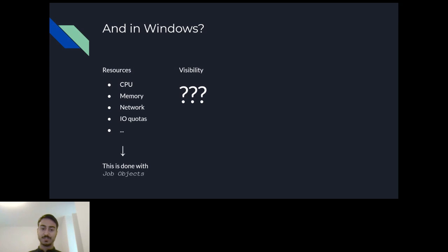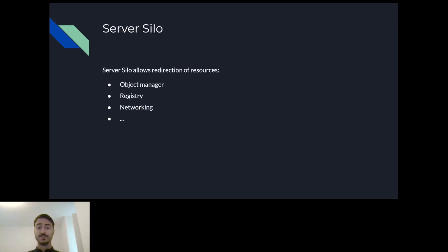What about visibility isolation? Until recently, Windows didn't actually have a solution for this, and that's why Windows containers didn't exist until only a few years ago. Luckily, a few years ago Microsoft came up with a feature called server silo, which directly provides the missing features that were necessary in order to create a container solution. Server silos provide everything that namespaces provide in Linux — they isolate the object manager, the registry, networking, devices, and basically any named object that the process can access.